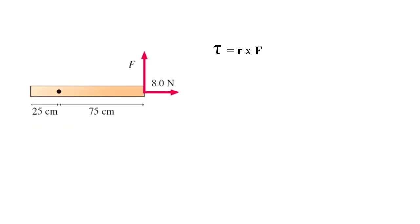Torque is defined as R cross F. R is the position vector from the dot, that's the pivot, to the place where the force is applied, so it's to the edge.